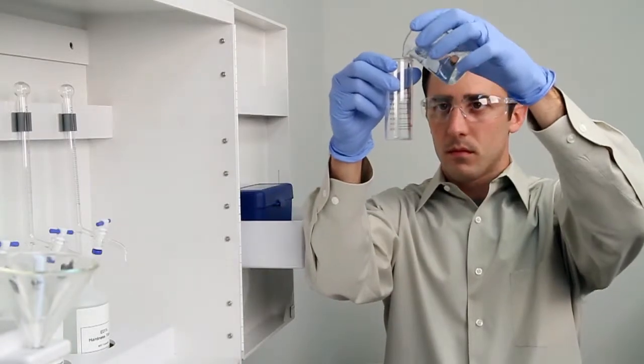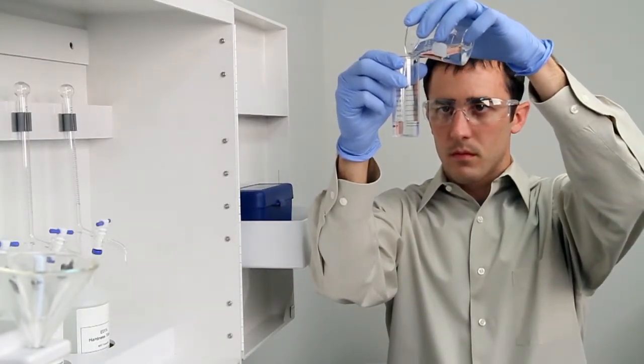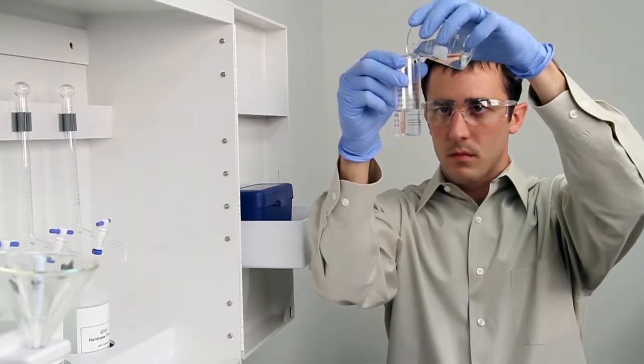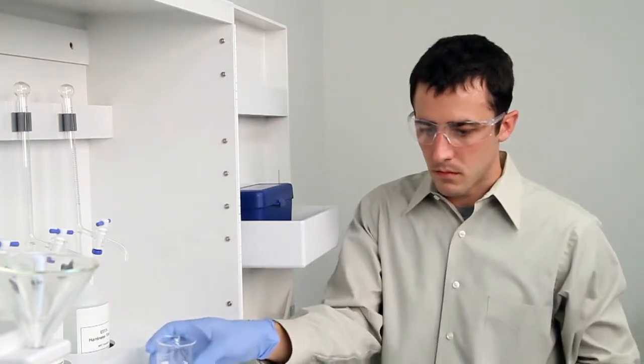To get an accurate sample, hold the vial close to eye level. Accuracy is very important during this step. Once you feel you have an accurate sample, place the vial on a level surface and bend down to eye level to verify.